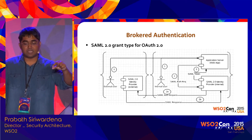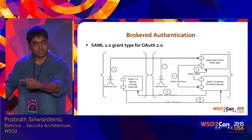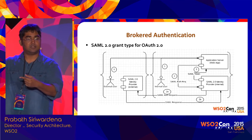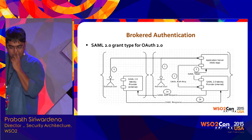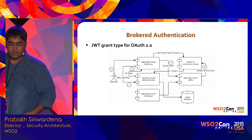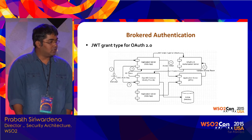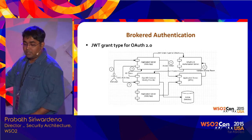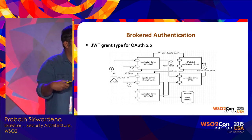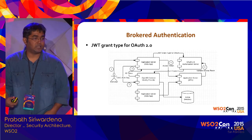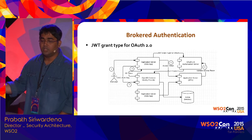The same pattern also applies using JWT instead of SAML. This is useful if you authenticate your web app using OpenID Connect — with OpenID Connect, what you get is a JWT. If you want to access an API after that, there should be a way to exchange that JWT for an access token, and the same flow applies.